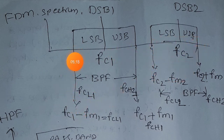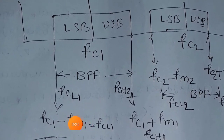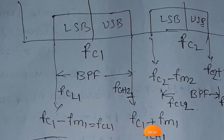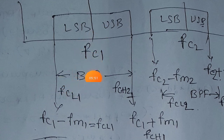The bandwidth limits of DSB1: FC1 minus FM1 is the lower frequency and FC1 plus FM1 is the higher frequency. You have to select a bandpass filter with lower cutoff frequency FC1 minus FM1 and upper cutoff frequency FC1 plus FM1. With this lower and upper cutoff frequency selection, we can separate DSB1 from the FDM signal.